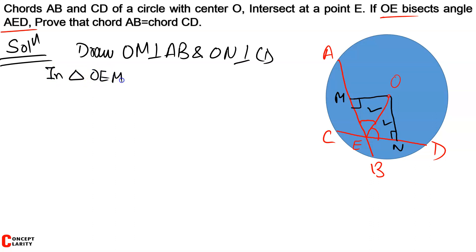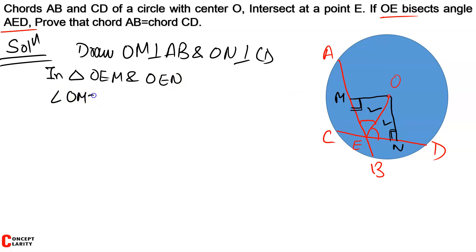In triangle OEM and triangle OEN, we will prove their congruence. First, angle OME is equal to angle ONE. Why? Because they are 90 degrees — they are equal because we constructed them as perpendiculars.